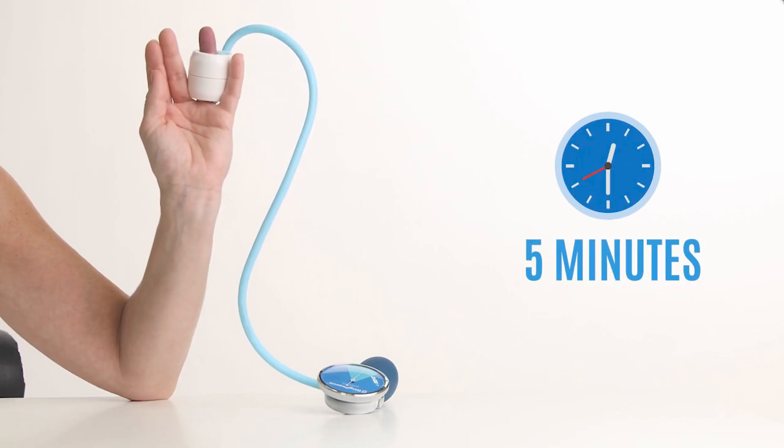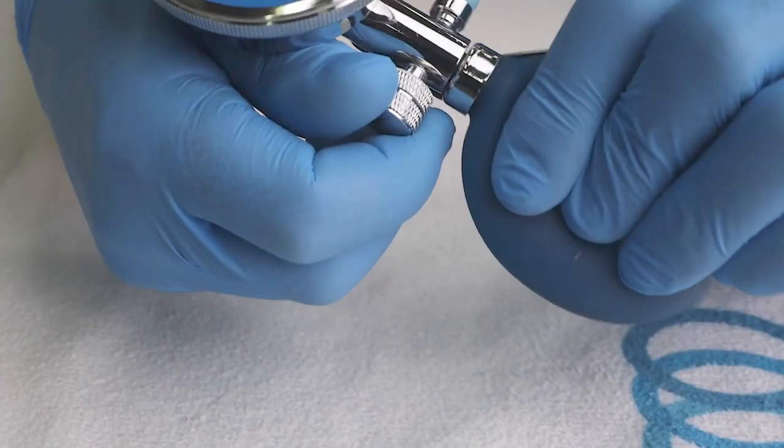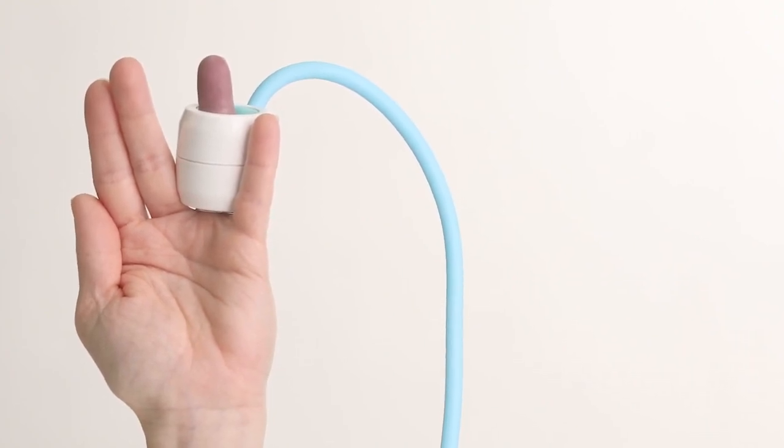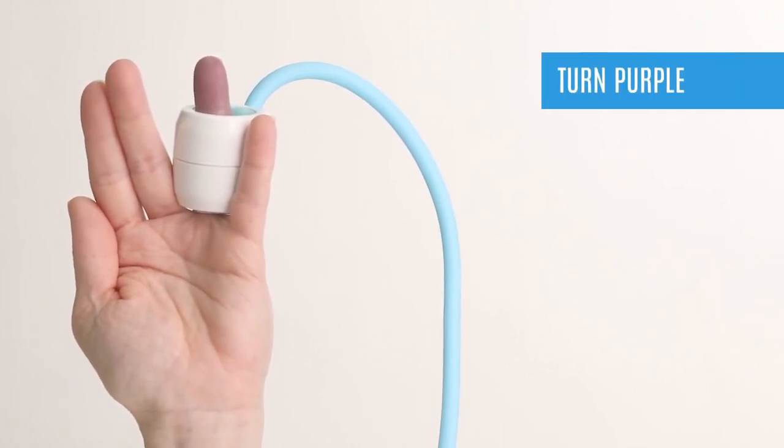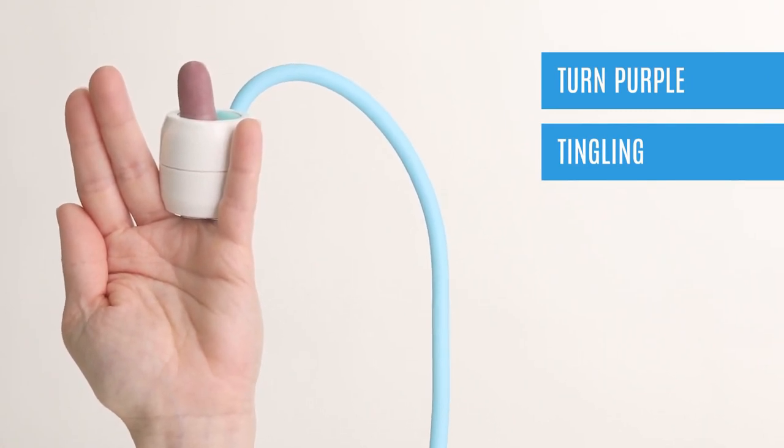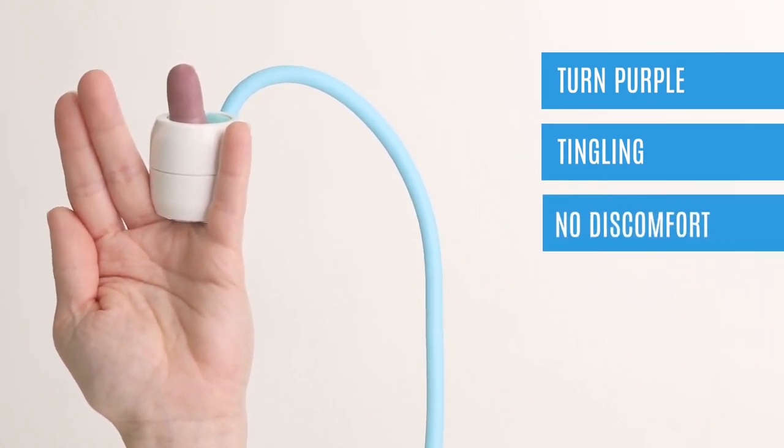The dial may fall out of the target zone area. Simply reapply more pressure to bring it back to the target zone. During this time, you may notice the person's fingertips turning purple and they may feel a mild tingling sensation. This is very common and will return back to normal when the device is removed. The individual should not feel any discomfort during this process.